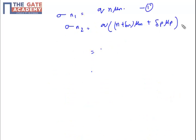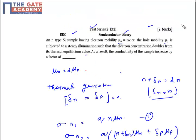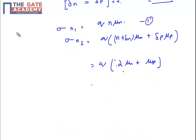Let's put the values. You will get q times (2μn + μp). And you know that μp is nothing but μn by 2. Just put the value of μp also. In the expression you will get q times 2μn plus μn by 2, basically q times 2.5 μn. That is your σ2.